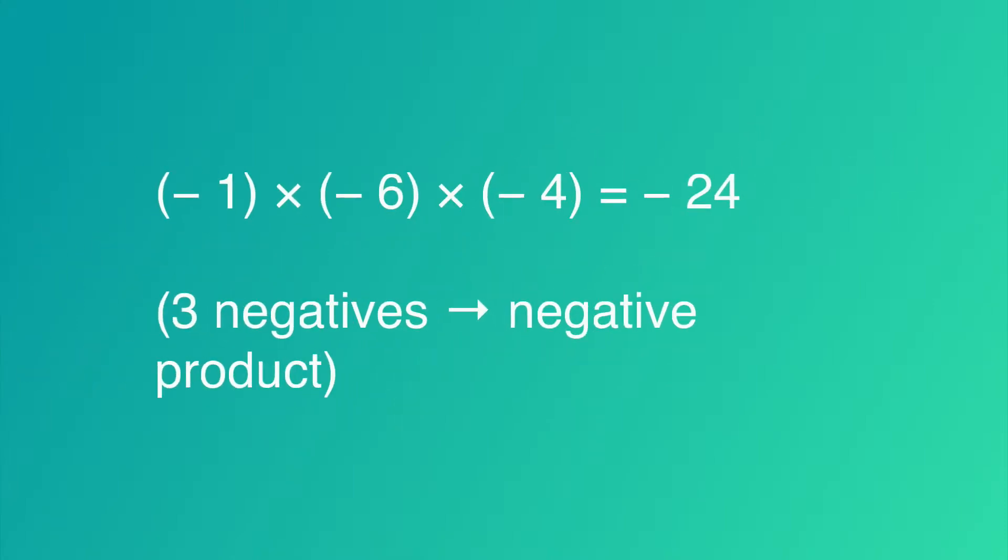Another example, negative 1 times negative 6 times negative 4, which equals negative 24. There are three negatives, which makes this a negative product.